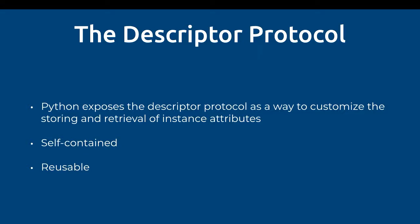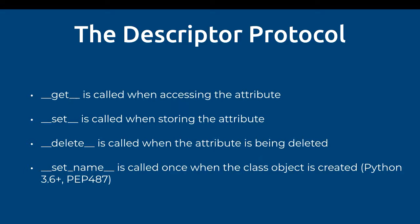The descriptor protocol is exposed by Python as a way to customize the storage and retrieval of instance attributes. They are implemented as classes, which means they're self-contained and reusable. To implement a descriptor, there are four different methods we can implement: the __get__ method for customizing retrieval, __set__ for storage, __delete__ for deletion, and as of Python 3.6, the __set_name__ method. __set_name__ is interesting because it's only called on class creation rather than instance creation. If you wanted to replicate __set_name__ functionality in versions prior to 3.6, you'd either need to use metaclasses or pass in the name when you initialize the descriptor, although that could have some human error.